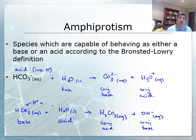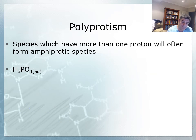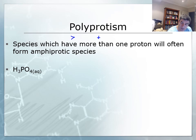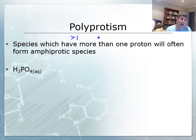There's something else we can look at: polyprotism. Polyprotism is what it sounds like — 'poly' means many, so more than one proton. Sulfuric acid is a good example of a species that has more than one proton and will often form an amphiprotic species. The example I've looked at here is phosphoric acid, which has three protons.